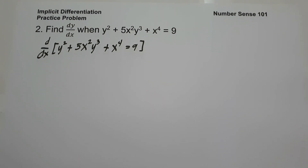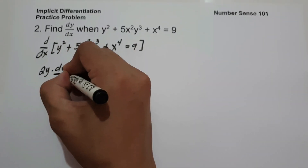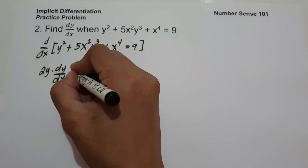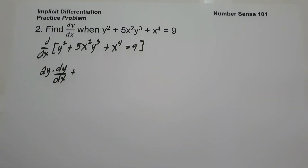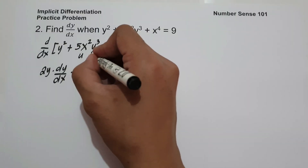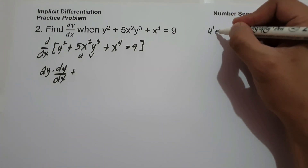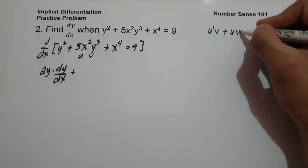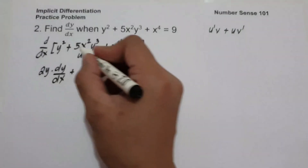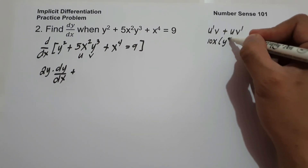Whenever we differentiate a y variable, it is always associated with dy over dx. So the derivative of y squared is 2y times dy over dx. And then let us find the derivative of 5x squared times y cubed. We have a product, so u equals 5x squared and v equals y cubed. Product rule is u prime times v plus u times v prime. u prime, the derivative of 5x squared, is 10x.